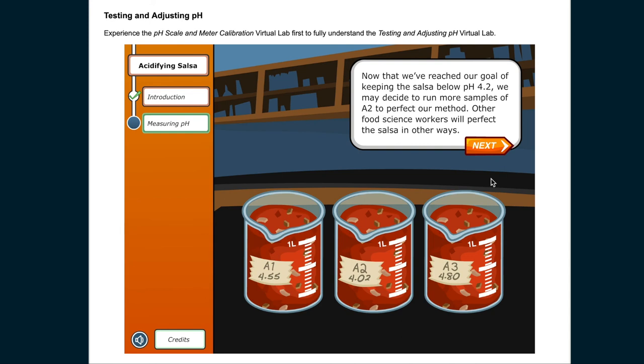Now that we've reached our goal of keeping the salsa below pH 4.2, we may decide to run more samples of A2 to perfect our method. Other food science workers will perfect the salsa in other ways.